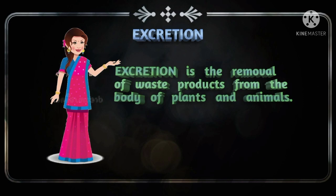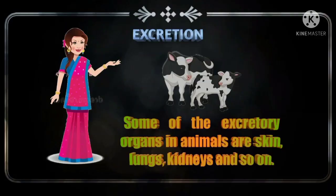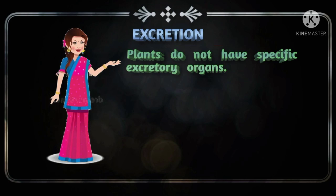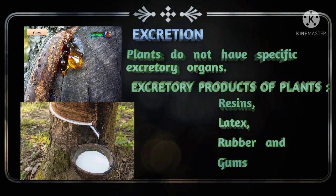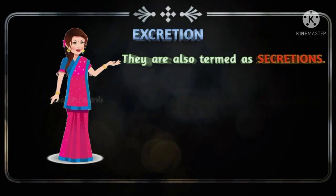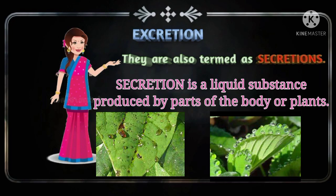Okay, students. The next topic is excretion. Excretion is the removal of waste products from the body of plants and animals. Some of the excretory organs in animals are skin, lungs, kidneys, and so on. Unlike animals, plants do not have specific excretory organs. Resins, latex, rubber, and gums are some of the excretory products of plants. They are also termed as secretions. Secretion means a liquid substance produced by parts of the body or plants.